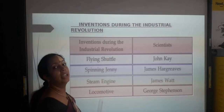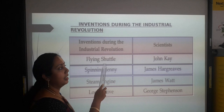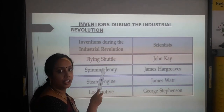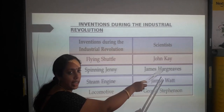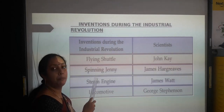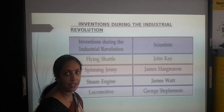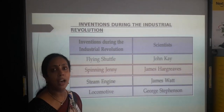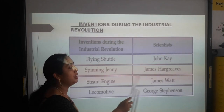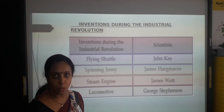Inventions during the Industrial Revolution were: first, the flying shuttle, invented by John Kay; second, the spinning jenny, invented by James Hargreaves; and third, the steam engine, invented by James Watt.